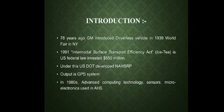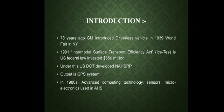First, around 78 years ago, GM introduced a driverless vehicle at the 1939 World Fair in New York. In 1991, the Intermodal Surface Transportation Efficiency Act, a U.S. federal law, invested $650 million. Under this, the U.S. DOT developed an AHSRP, and the output of this was a GPS system.